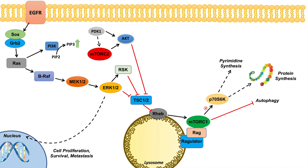The RAS-RAF-MEK-ERK pathway can lead to increased cell proliferation, survival, and metastasis. Because these processes require effects of the mTOR complex 1 pathway, we see increases in pyrimidine synthesis, protein synthesis, and inhibition of autophagy. They all work together to perform the roles of cell proliferation, metastasis, and anabolic processes within the cell. Please check out my other lessons for more information on the RAS-RAF-MEK-ERK pathway, the mTOR complex 1 pathway, and the AKT pathway.